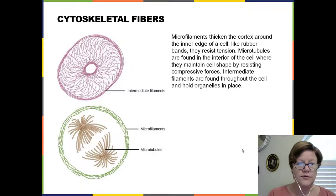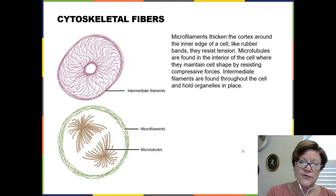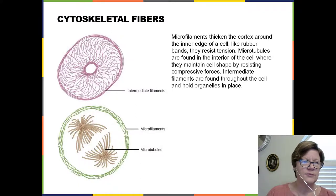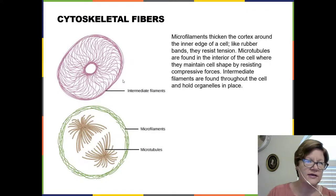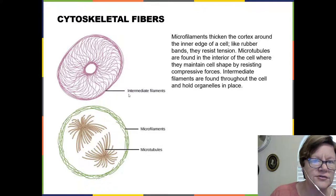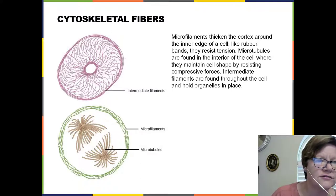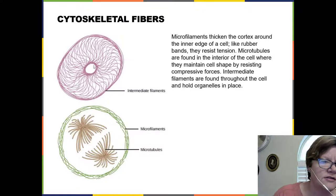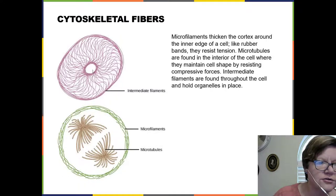So if you thought the cell was just full of liquid — it is full of liquid — but as you can see in this top image, this is an image of a cell with everything taken away except for the intermediate filaments. You can see that they crisscross and also go just underneath where the plasma membrane would be, and you can see how they go around but not into the nucleus.